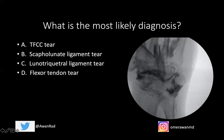In fact, we can actually see contrast here outlining the lunotriquetral ligament, and we can see contrast going from the proximal carpal row to the mid-carpal row through the lunotriquetral space between the lunate and triquetrum. So this is a lunotriquetral ligament tear. If we saw contrast going through the scapholunate interval from the proximal to the mid-carpal row, that would be a scapholunate ligament tear.